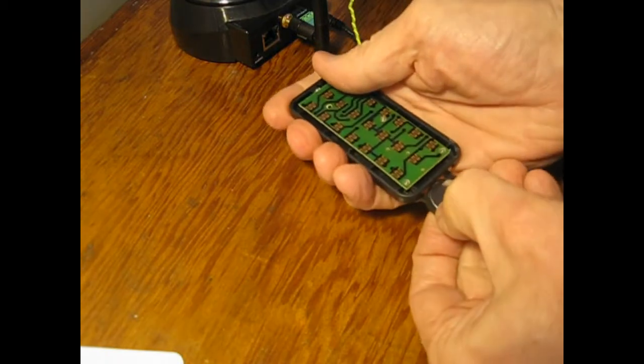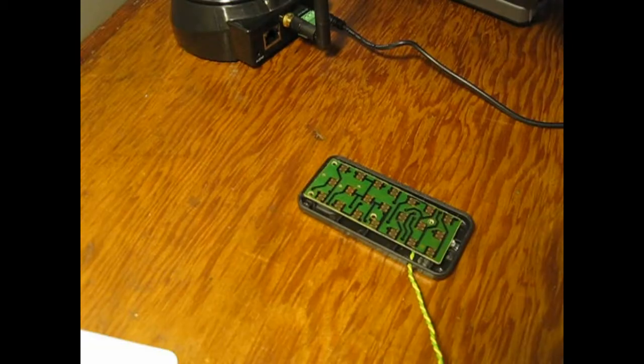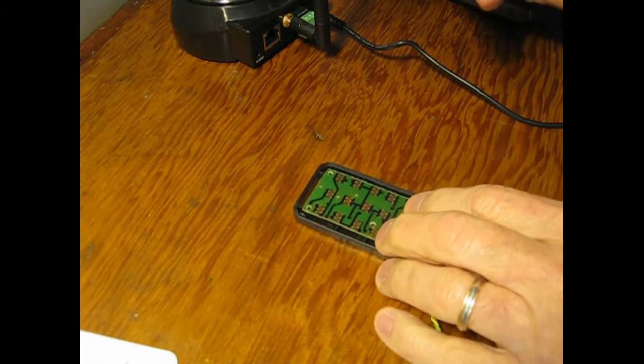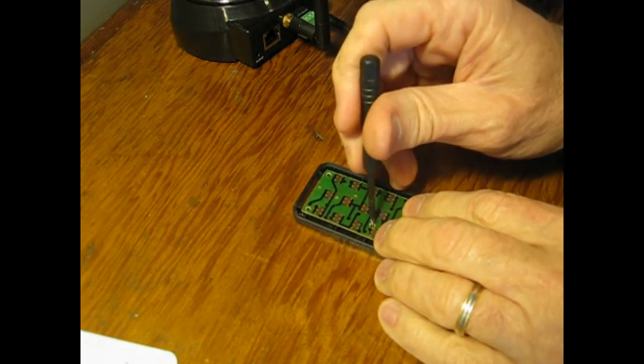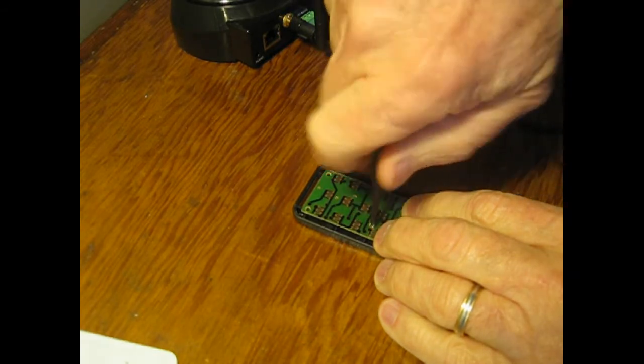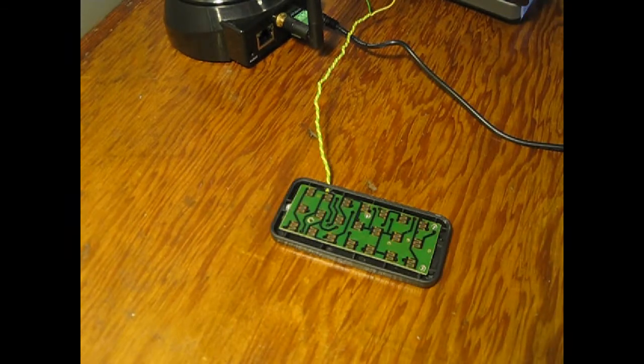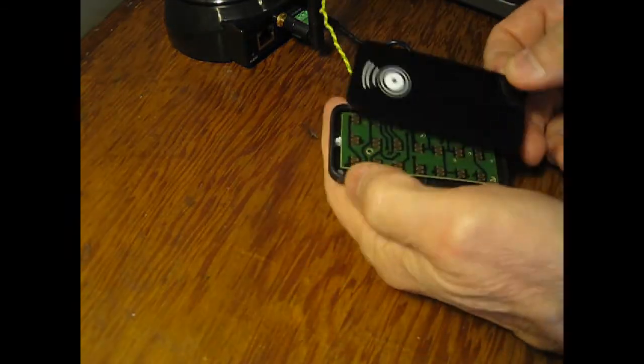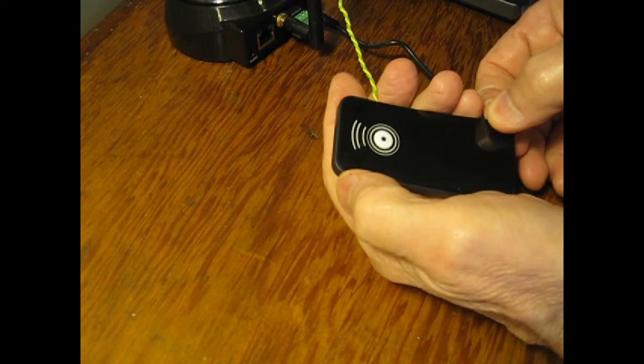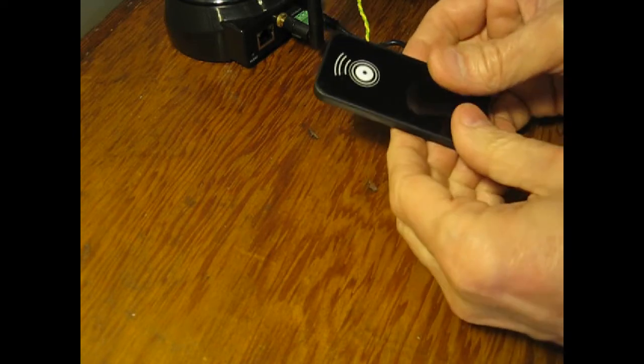With the wiring complete, we can put everything back together. Install the battery, reinstall the screws, and reapply the faceplate with the sticky backing.